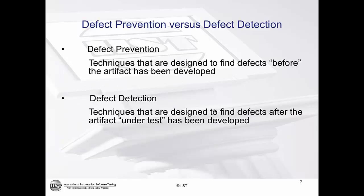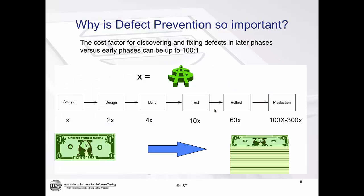Let's talk about defect prevention versus defect detection. At a high level, defect prevention encompasses any technique designed to find defects before the actual artifact has been developed. Defect detection is more of our formal testing techniques — these are techniques used to find defects after an artifact has been developed or is under test.